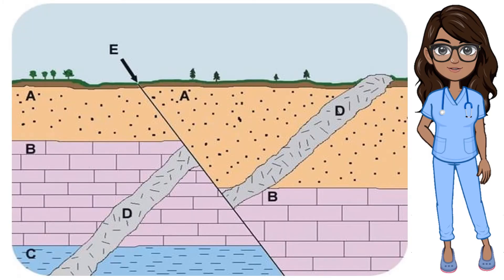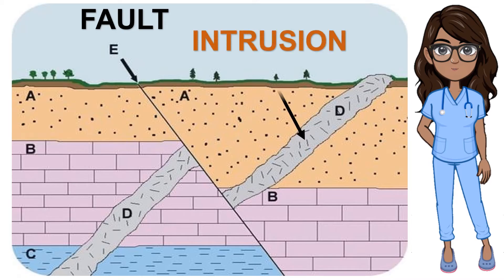The principle of cross-cutting relationships states that a fault or intrusion is younger than the rocks that it cuts through. The fault cuts through all three sedimentary rock layers — A, B, and C — and also the intrusion D. So the fault must be the youngest feature. The intrusion D cuts through the three sedimentary rock layers, so it must be younger than those layers.